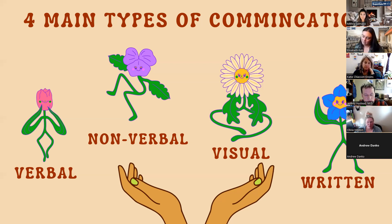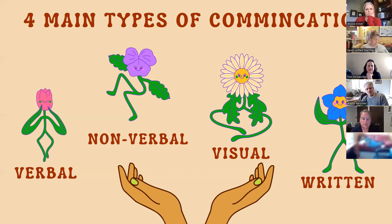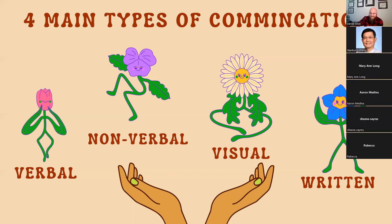Communication is going to be largely based on the environment, who you're communicating with, their experiences, and the noise within the environment. All of those things have to be accounted for, but there's still a large area where miscommunication can happen.